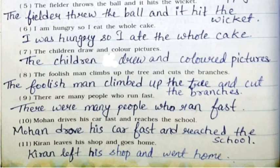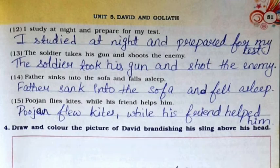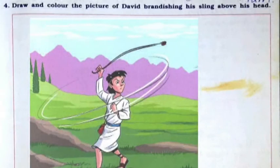Seventh: The children drew and colored pictures. Eighth: The foolish man climbed up the tree and cut the branches. Ninth: There were many people who ran fast. Tenth: Mohan drove his car fast and reached the school. Eleventh: Kinan left his shop and went home. Twelfth: I studied at night and prepared for my test. Thirteenth: The soldier took his gun and shot the enemy. Fourteenth: Father sank into the sofa and fell asleep. Fifteenth: Thujan flew kites while his friend helped him.